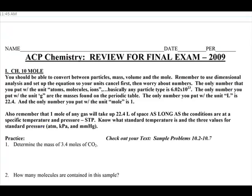To start with, it says the mole. You should be able to convert between particles, mass, volume, and the mole. This is important to remember: anytime you see the word atoms, molecules, ions, any type of things, you're going to use 6.02 times 10 to the 23rd. If you see grams, the only number you put with grams are the masses found on the periodic table. You'd never put 6.02 times 10 to the 23rd next to the letter G. If you see liters, 22.4 is the magic number that always goes with liters. And the only number you put with the unit mole is 1. Never put 6.02 times 10 to the 23rd moles. It's 6.02 times 10 to the 23rd atoms in one mole.